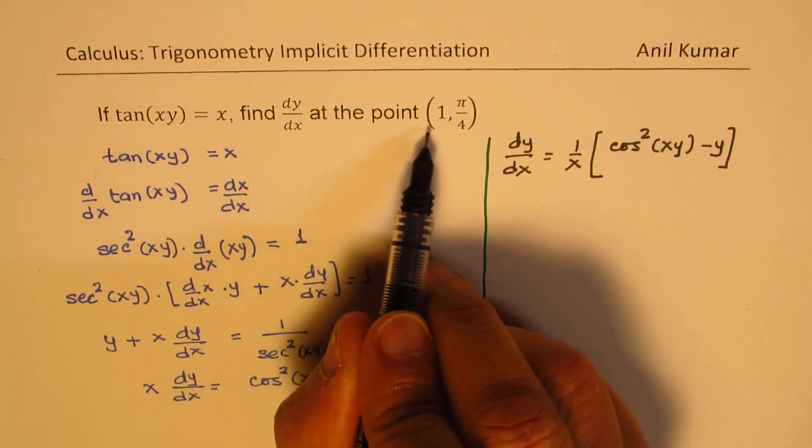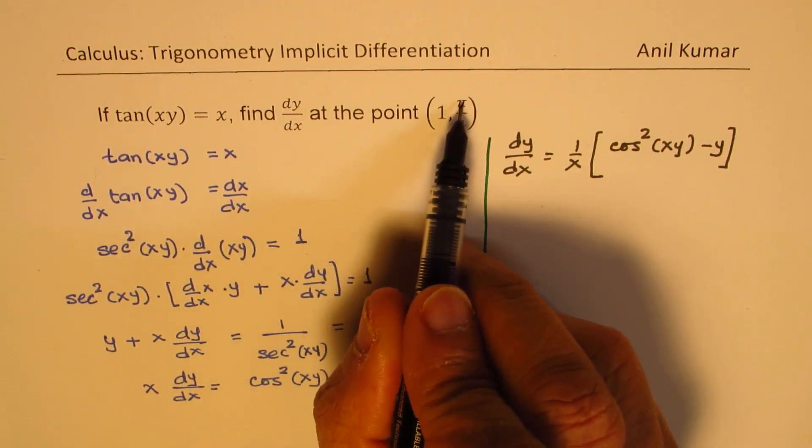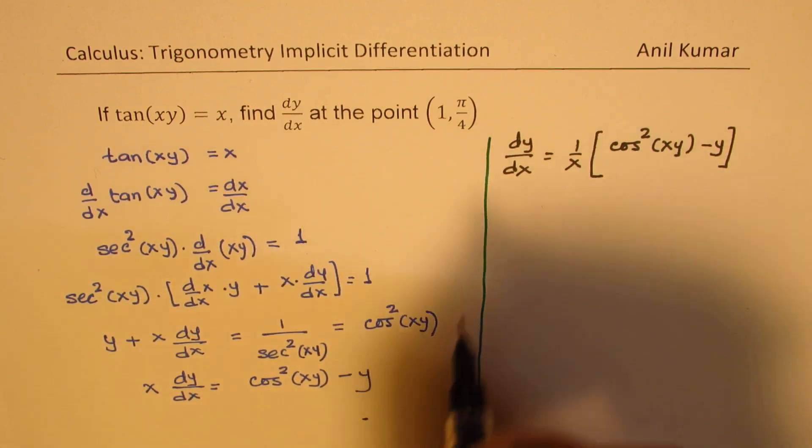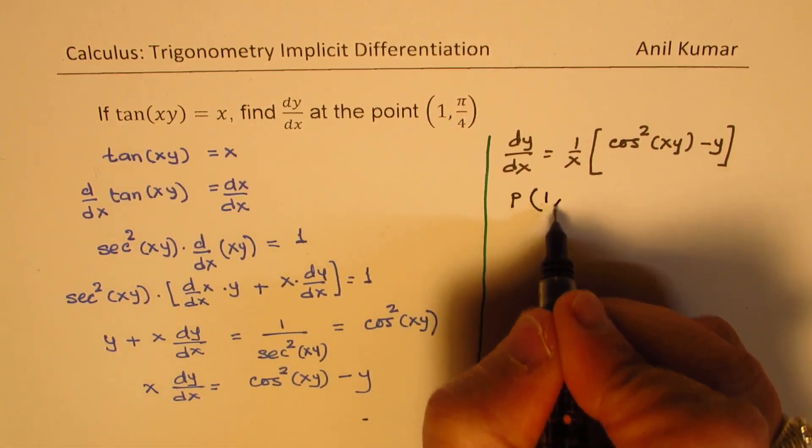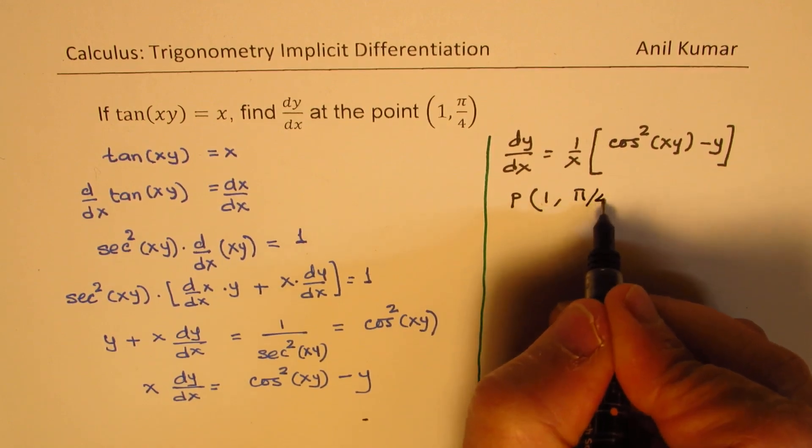We need to find the derivative at the point (1, π/4). So, at the point where the x value is 1 and the y value is π/4, dy/dx will be what?